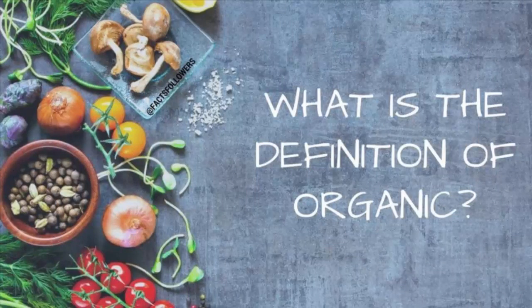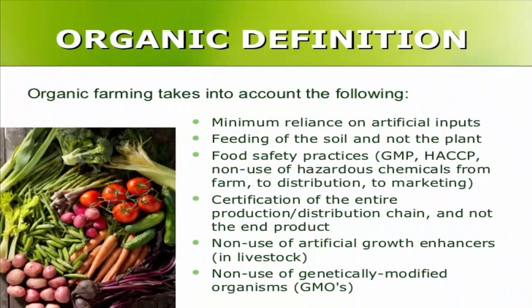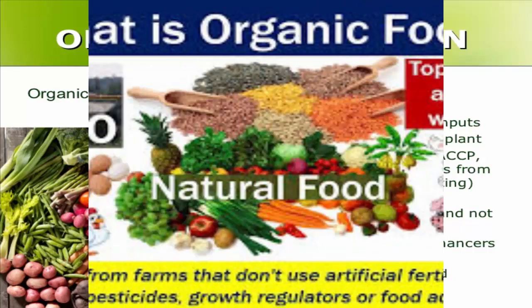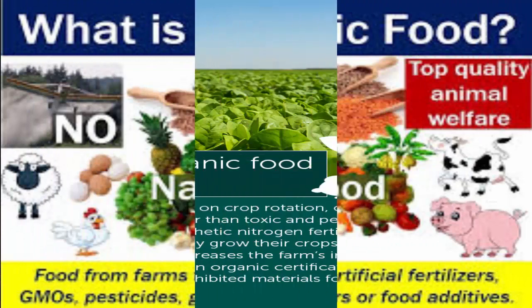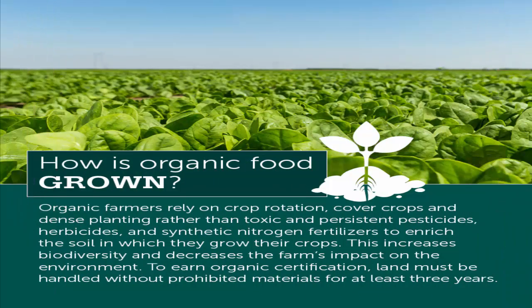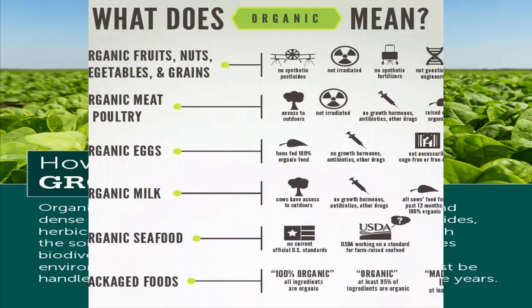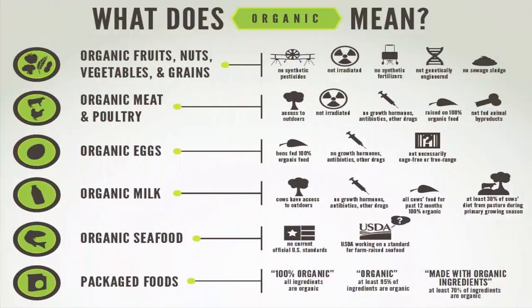Organic vegetables, fruits, eggs, milk, or meat can be defined as food in which no human-made or synthetic pesticides, herbicides, or fertilizers have been used. Instead, manure or compost is used to grow them.